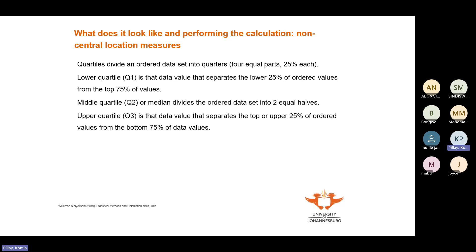We're looking at quartiles. Quartiles divide an ordered set of data into quarters — as the name suggests. For quarters there are four equal parts, each representing 25%. The lower quartile is the data value that separates the lower 25% of ordered values from the top 75%.